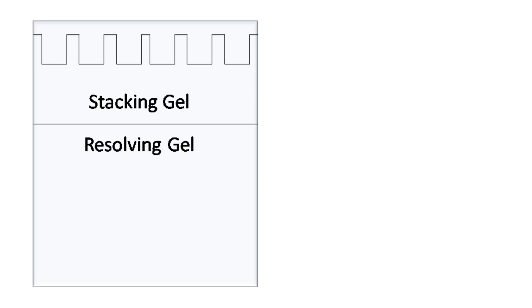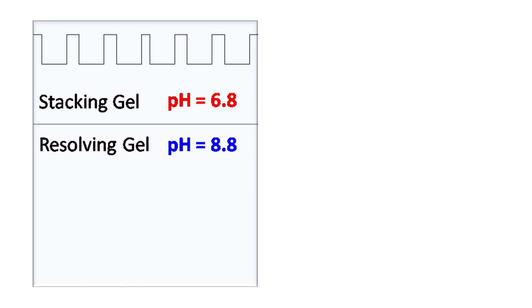For this purpose, we have stacking gel and a resolving gel. Stacking gel has a pH of 6.8, whereas the resolving gel has pH of 8.8.